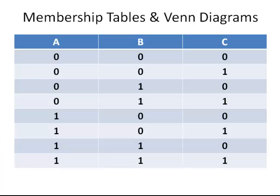First let's talk about a membership table. There is a membership table for each of these eight regions. In the first instance we would have 0, 0, 0. This indicates that the first region is not part of A, not part of B, and not part of C. So it is outside all three of those regions.